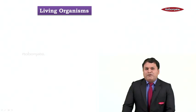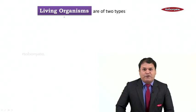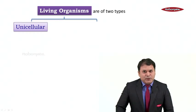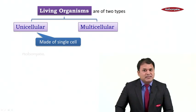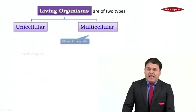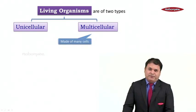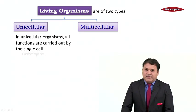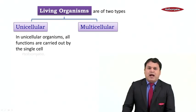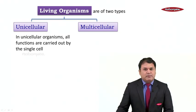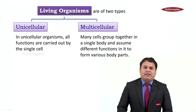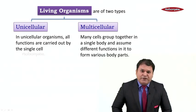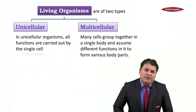Going further, we know that living organisms are basically of two types: unicellular and multicellular. Unicellular organisms are those which are made up of a single cell, whereas multicellular organisms are made up of many cells. In unicellular organisms, all the functions are carried out by the single cell. Whereas in multicellular organisms, many cells group together in a single body and assume different functions to form the various body parts.